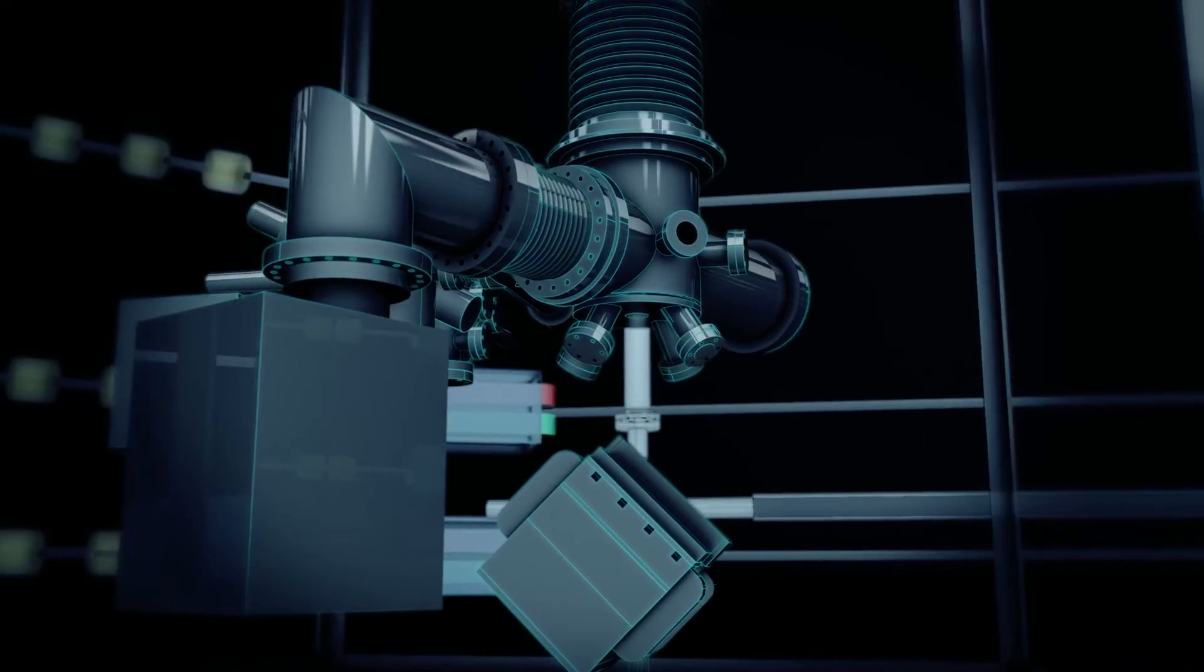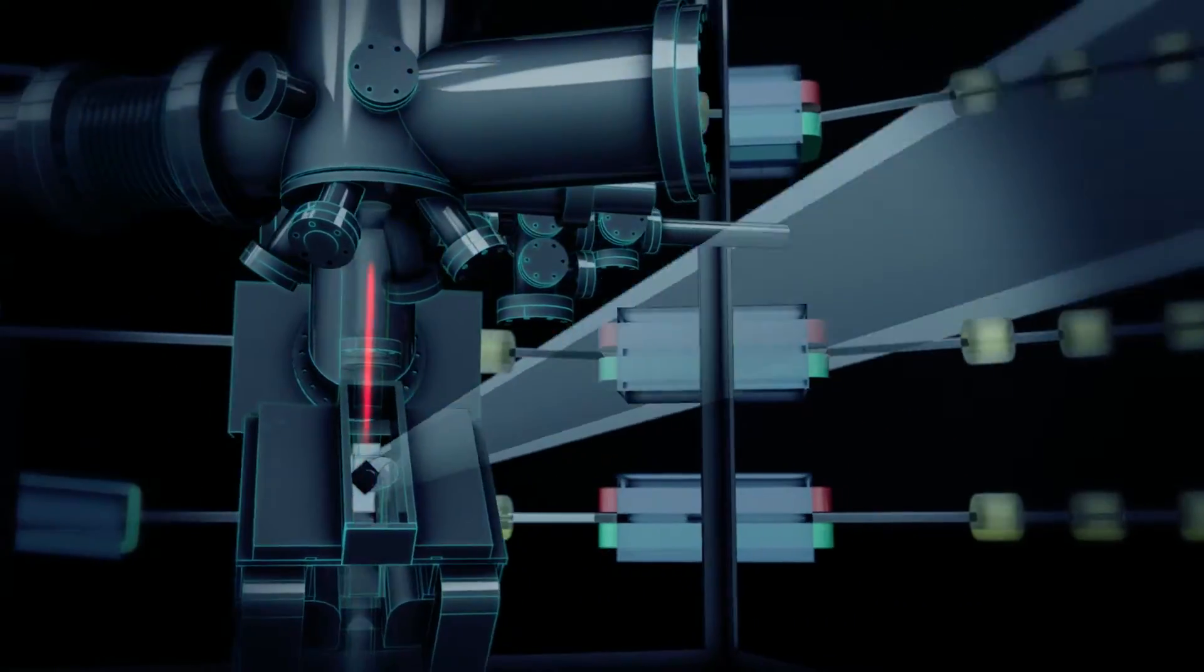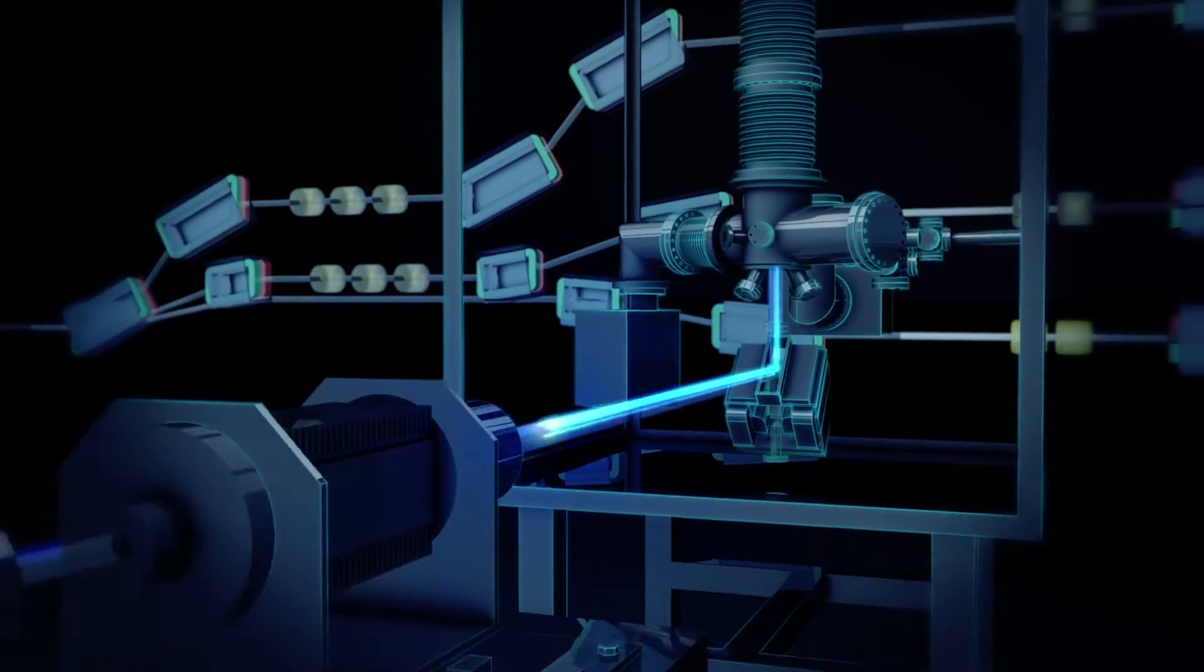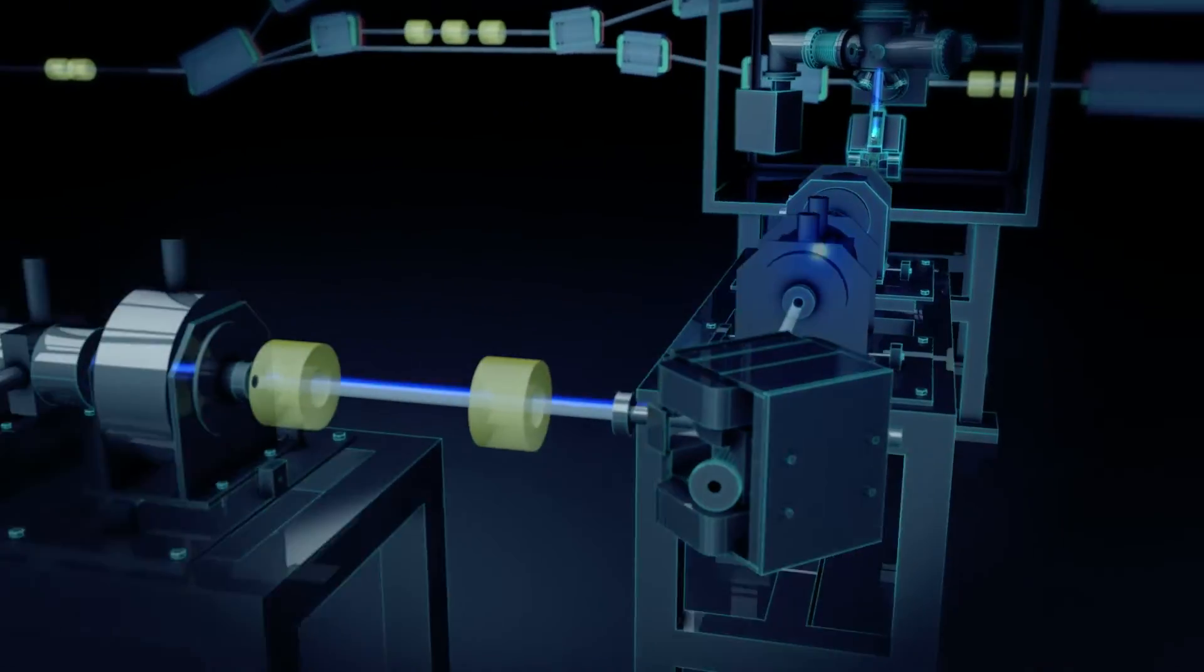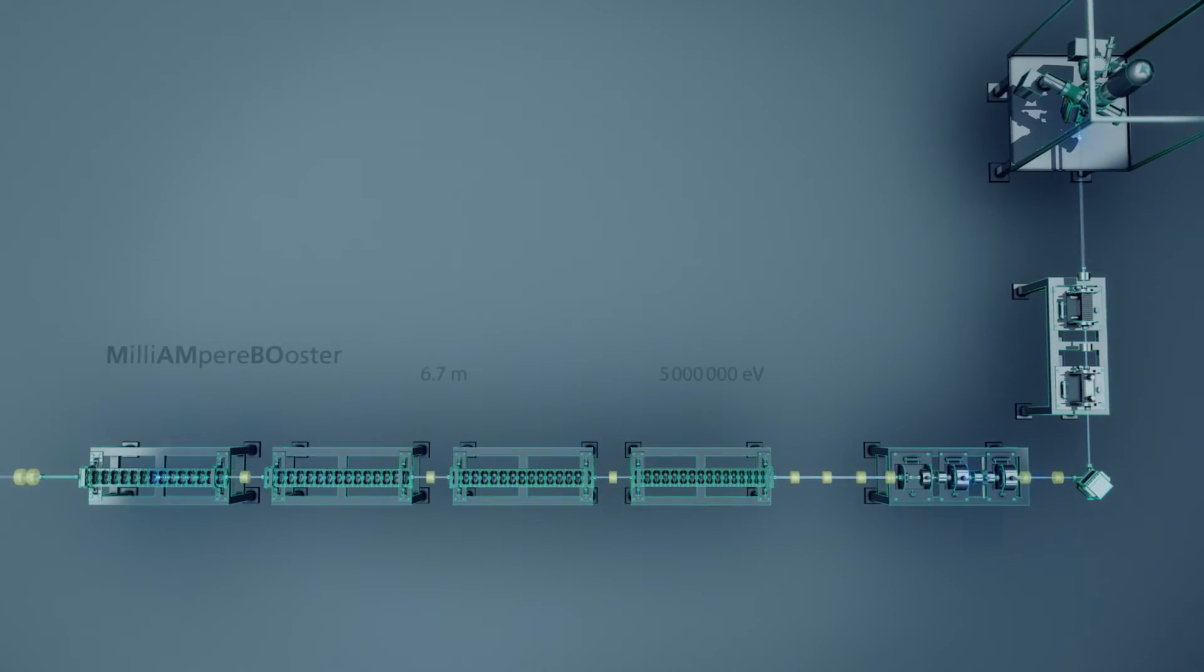We start with generating the electron beam. Laser light is shown on a photosensitive surface. Electrons are extracted and bundled into electron bunches. These bunches are accelerated by a voltage of 100,000 volts and fed into the pre-accelerator MUMBO.